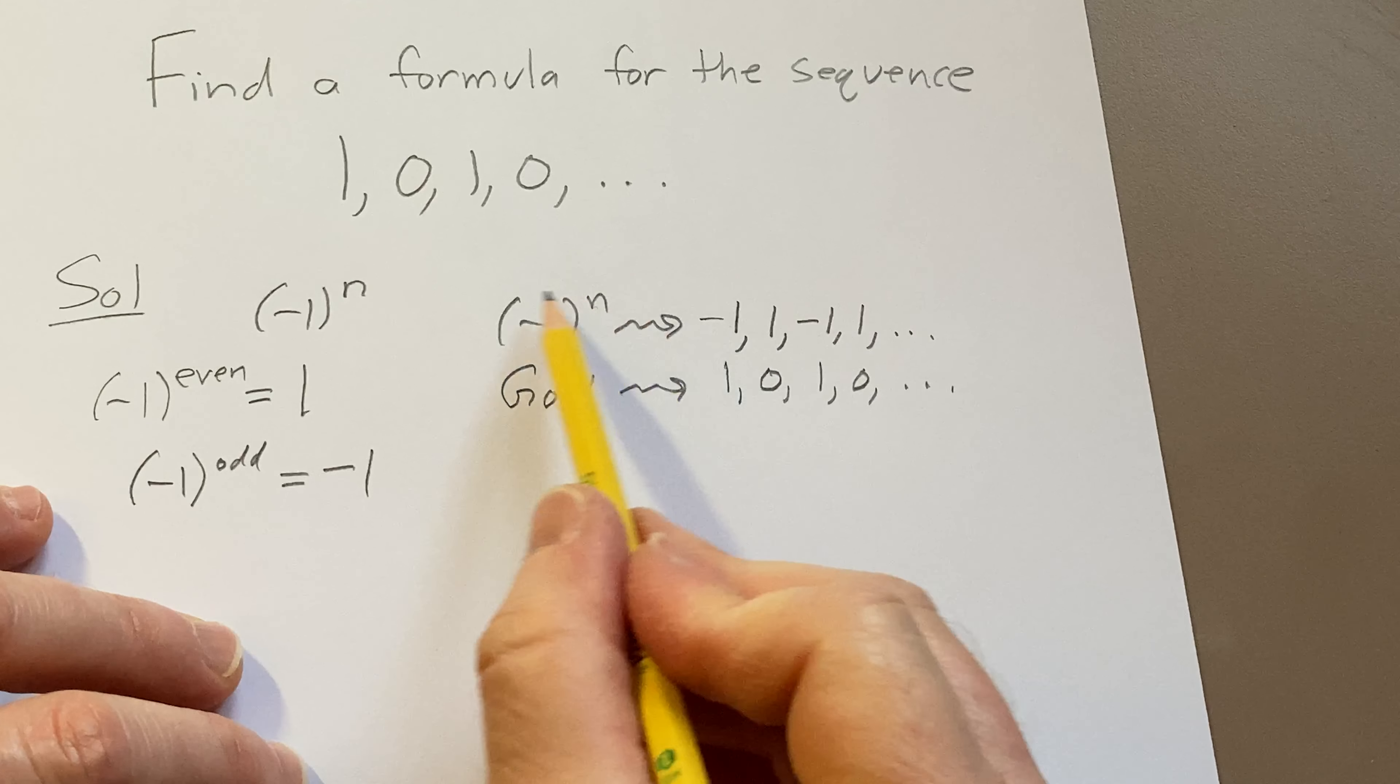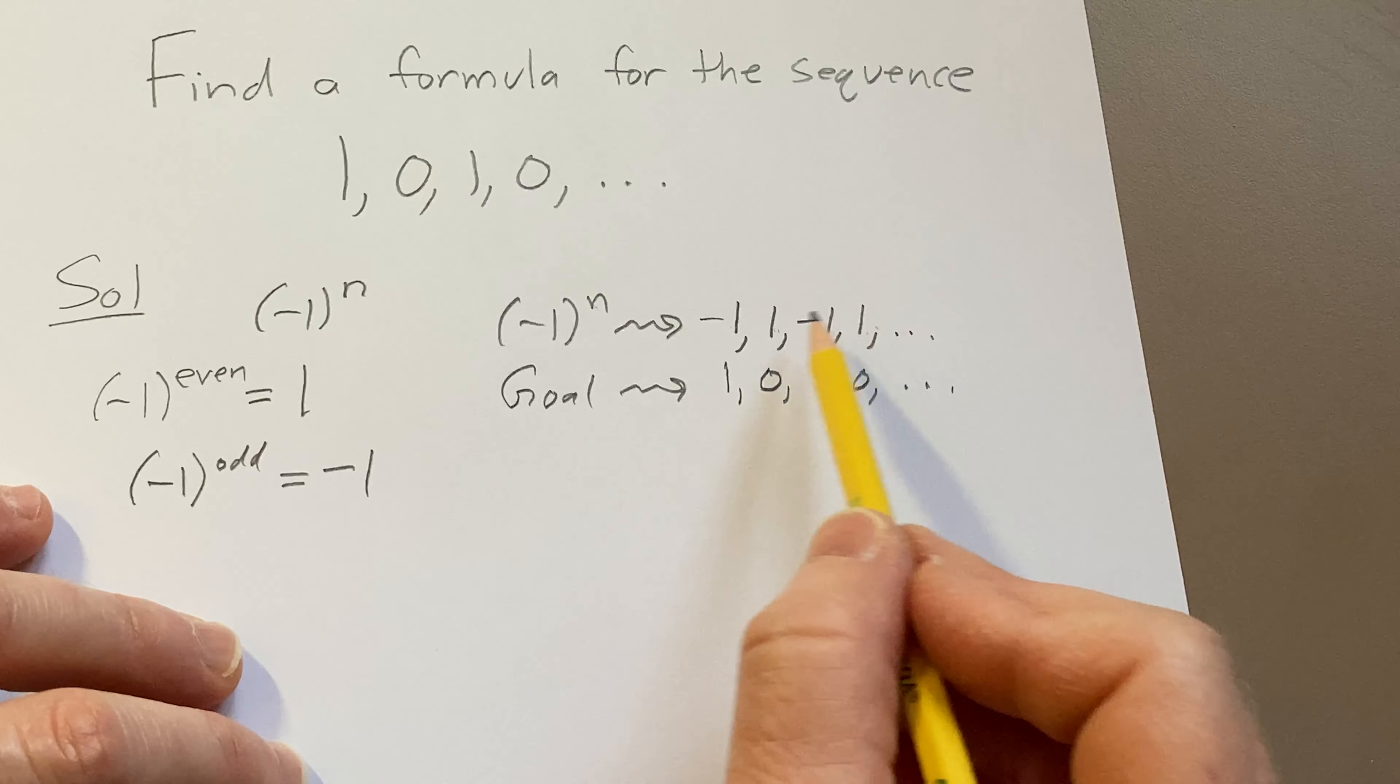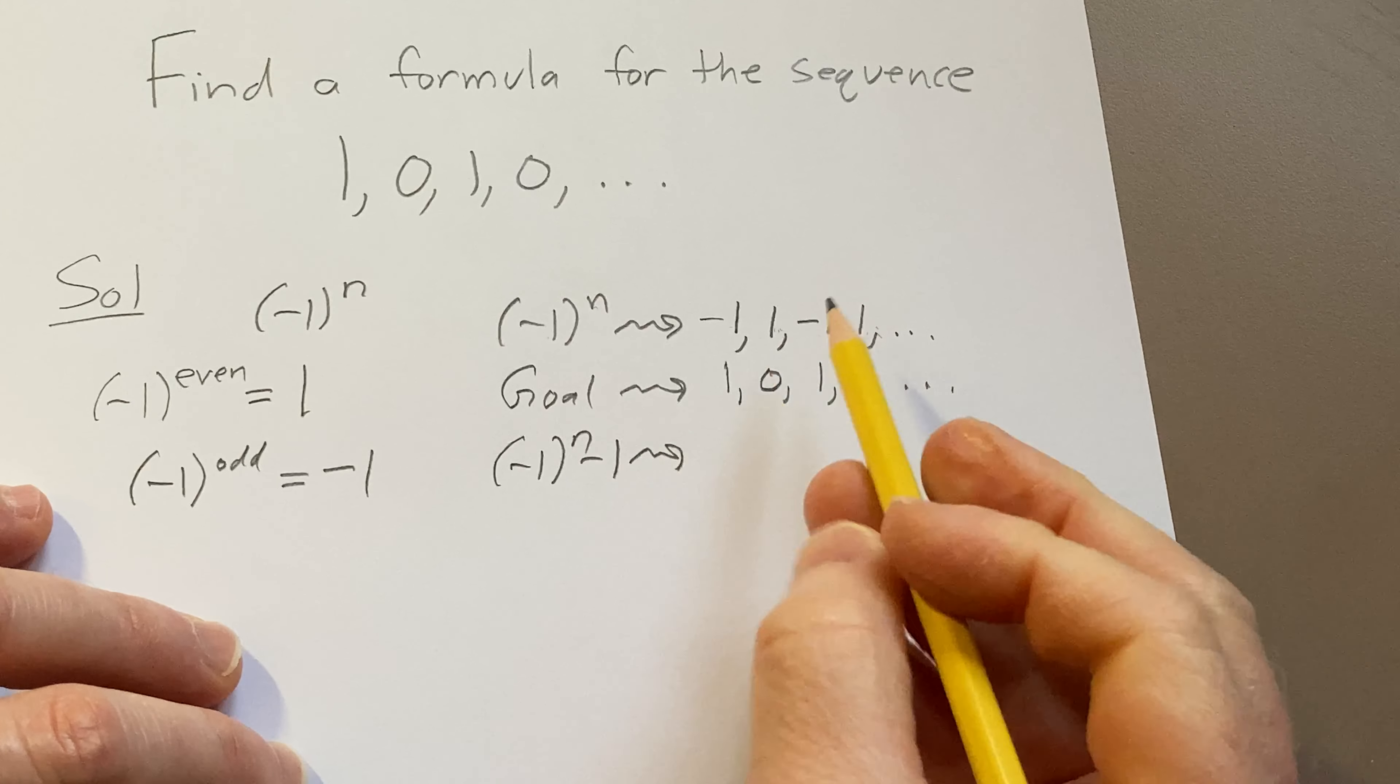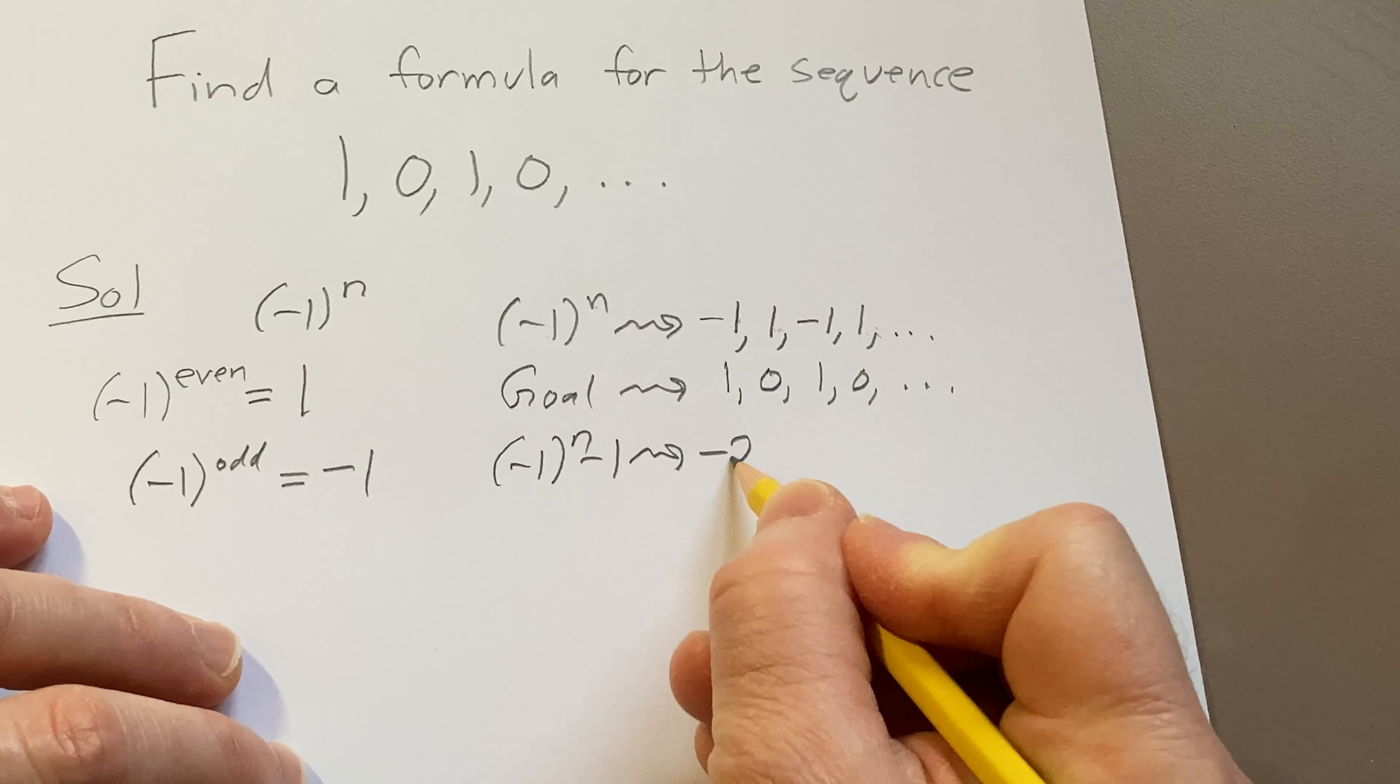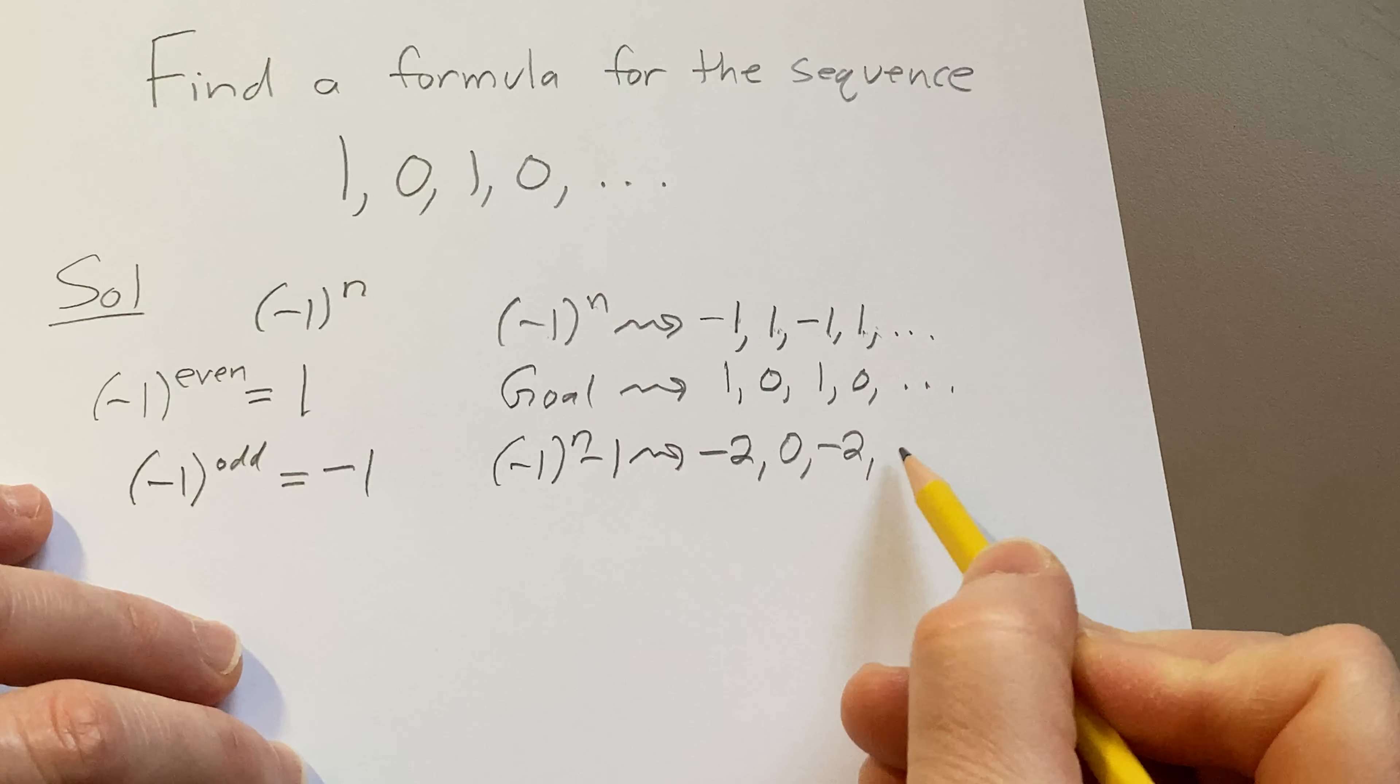So let's think about how we can manipulate this in order to get this. Let's maybe start by making all of these 1's into 0's. We can simply do that by subtracting 1 from this. So if you subtract 1 from every term of the sequence, you're going to get -2, 0, -2, 0.